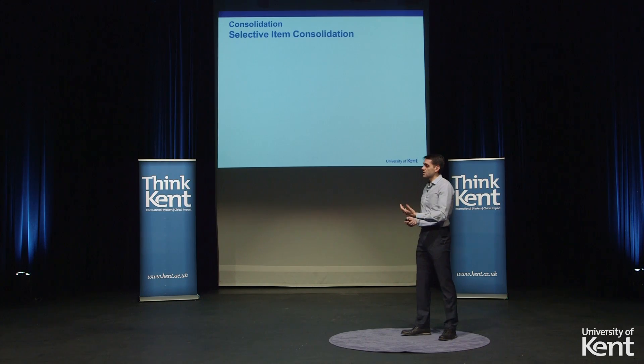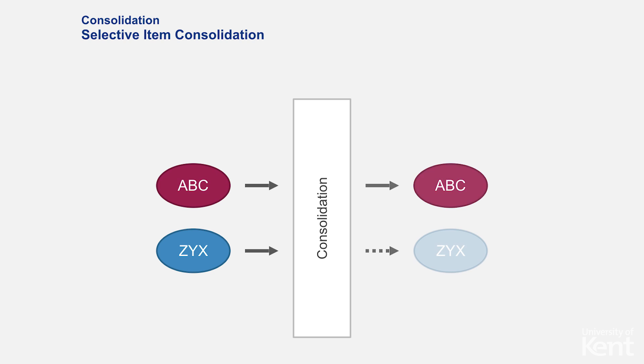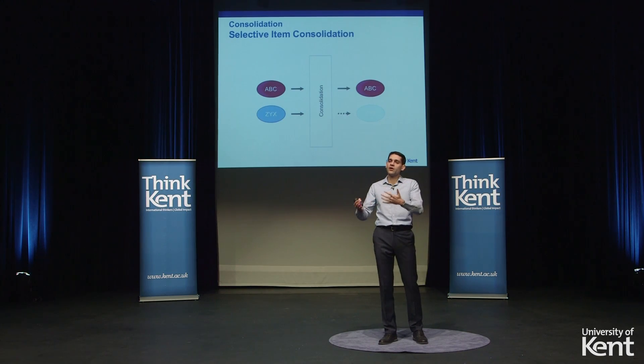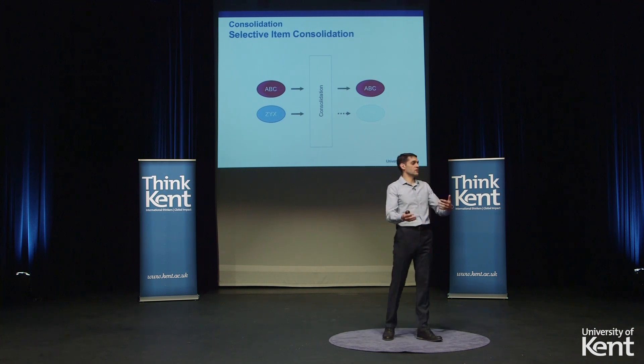The other form of consolidation is selective item consolidation. Imagine two pieces of information coming in — when they go through consolidation, one is maintained better than the other. For example, you are walking in the street and people pass by, and you see a dog barking at a man. The next day you might not remember the people who passed by, but you remember the dog barking at the man. That is the piece of information you highlighted in your mind, while the others were ignored — still there, but not as highlighted.